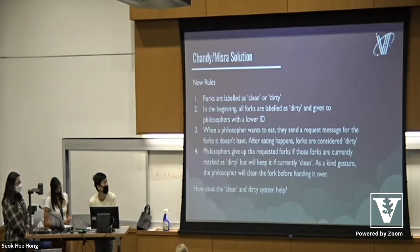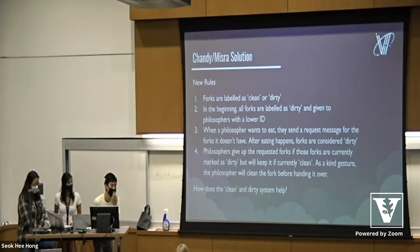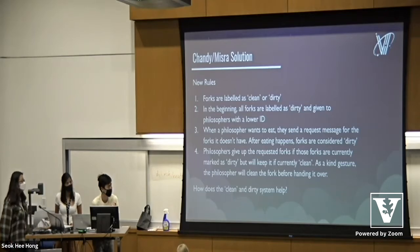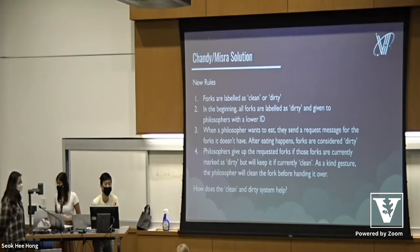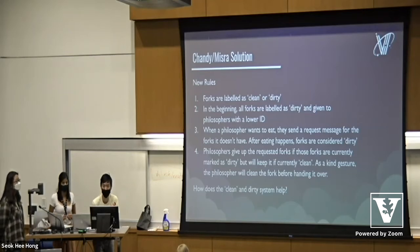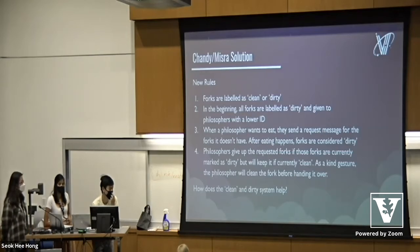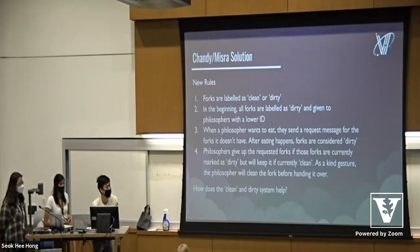The main idea here is that you can extrapolate these thinking ideas to a lot of problems in CS where you have multiple processes competing for the same resources. For example, if you're working on a collaborative Google Sheets project and multiple people want to access and edit the same cell — what kind of things do you need to consider? If you're interested in problems like these and you're taking CS at Vanderbilt, consider classes like operating systems or distributed systems, where we think about concurrent algorithms and synchronization problems that happen when multiple algorithms are running at the same time.